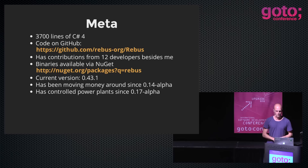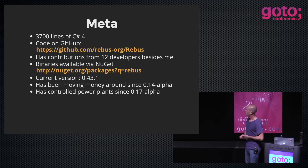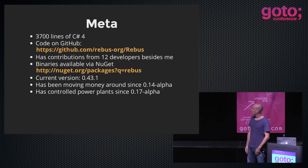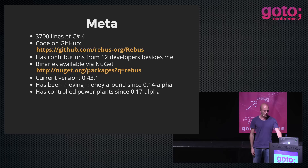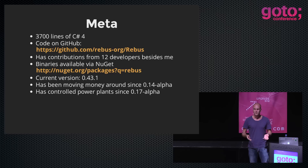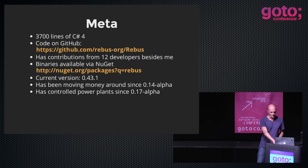The current version is 0.43.1. It's a pretty cryptic version name, and I've often been asked when version 1.0 will be out — but I don't think it makes much sense. Rebus has been moving money around since version 0.14 alpha, and it has controlled a couple of power plants since 0.17 alpha. So the version is just a number — there probably will never be a 1.0.